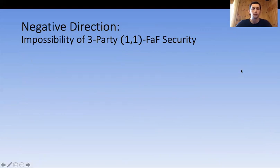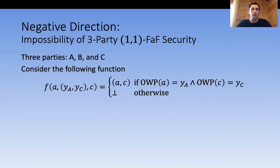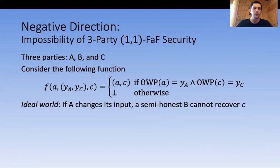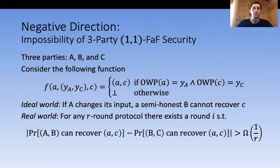For the negative direction, I'll discuss the impossibility for three parties with (1,1)-FaF security. Consider three parties A, B, C where A and C each hold a string, and B holds a one-way permutation of all those strings. If B does hold a one-way permutation, all parties output A and C; otherwise no party learns anything. In the ideal world, if A is malicious and changes its input, a semi-honest B has no information on C other than a one-way permutation, so it cannot recover C. And for any real protocol, there is always a round where one pair among (A,B) or (B,C) can recover the output with significantly better probability — proved by a simple averaging argument.